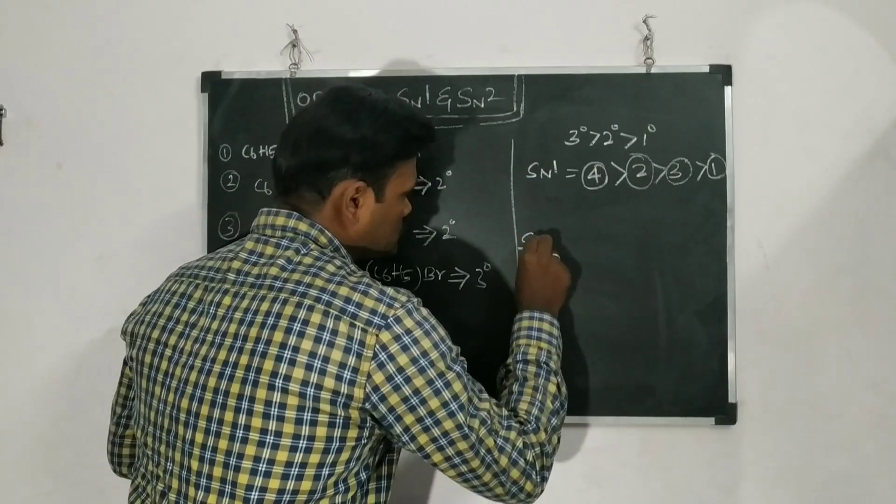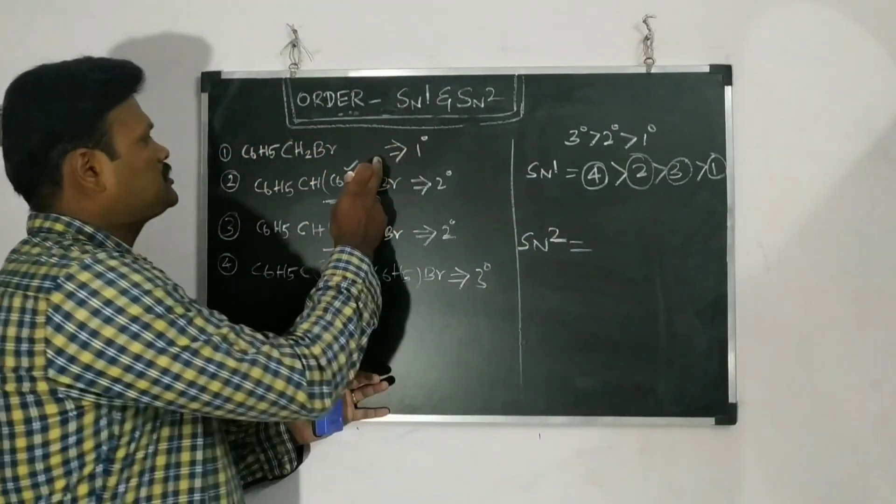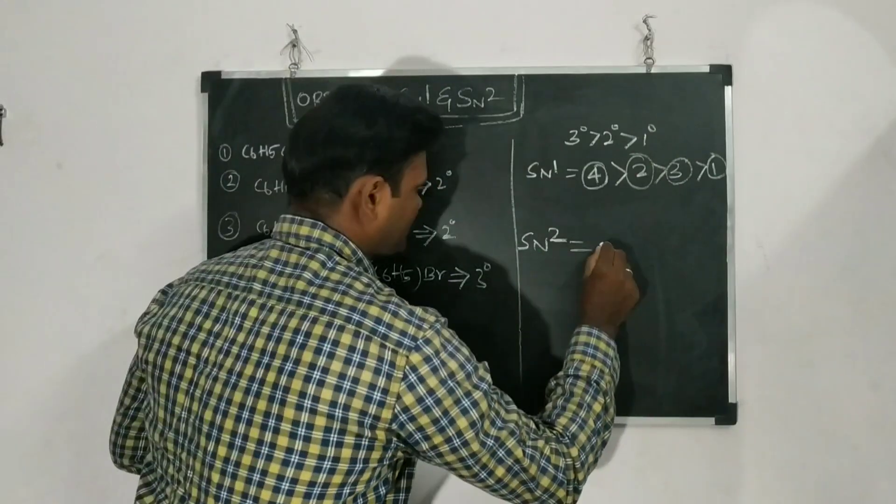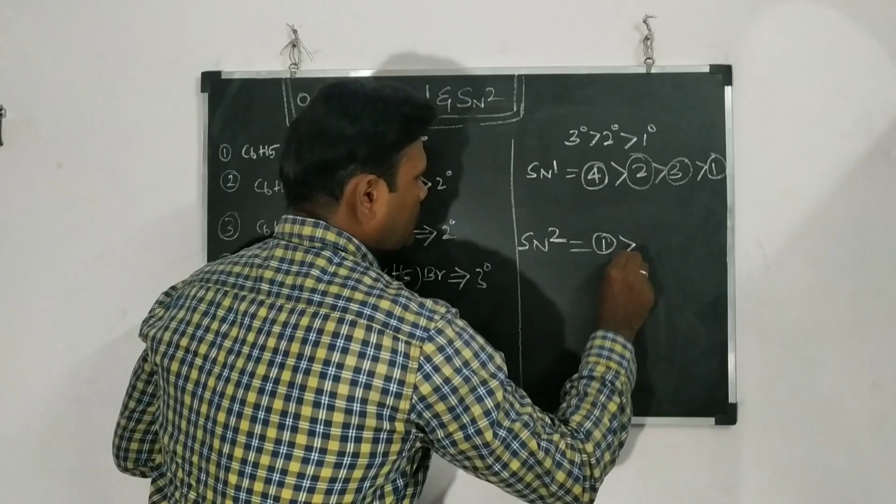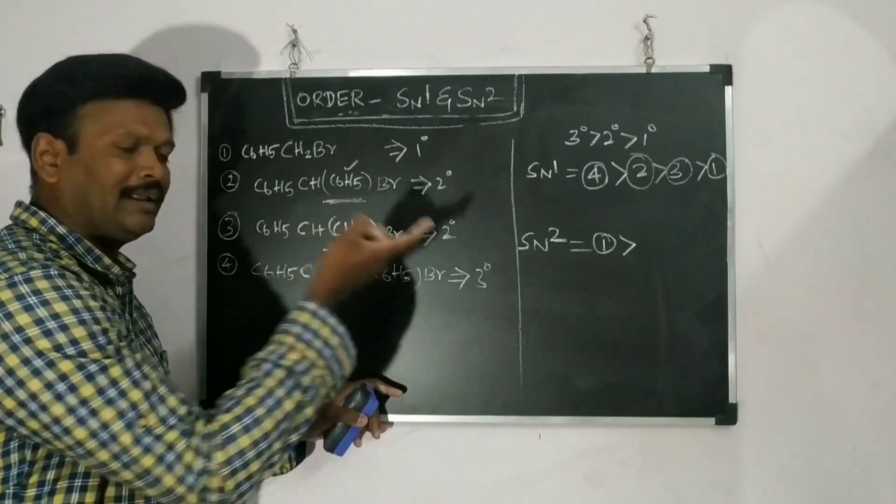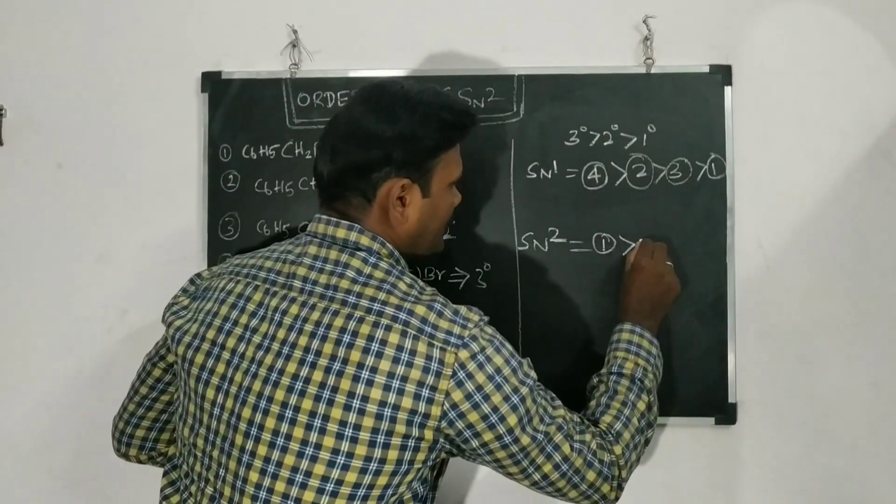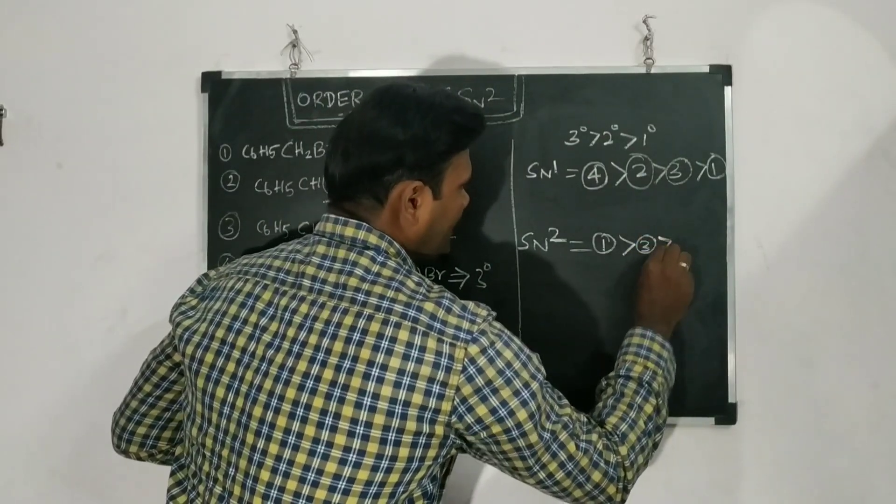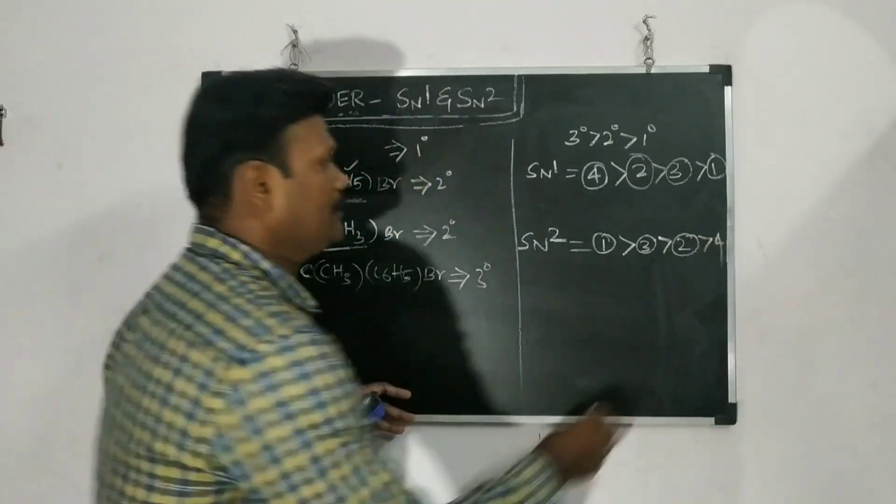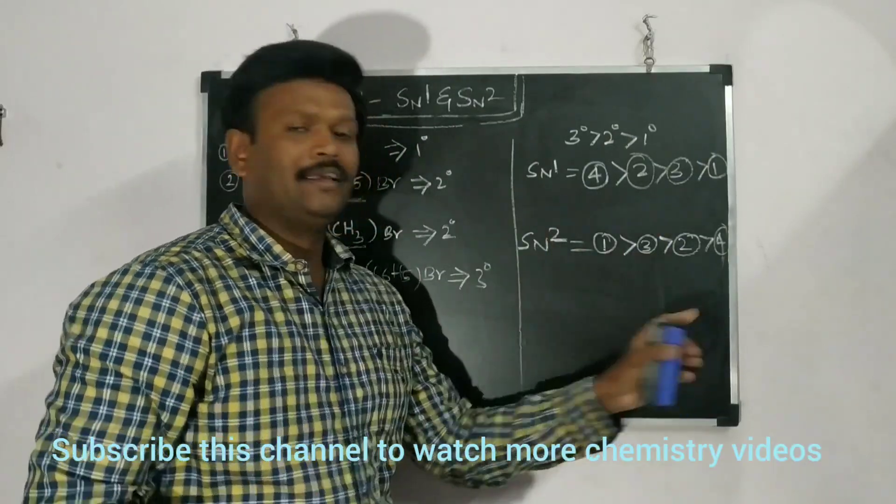Now we can find out the SN2. SN2 is just opposite for SN1. So here initially the 1 degree alkyl halide will react faster. So one will be reacting faster. And the steric hindrance will be more. So the less steric hindrance will be preferred in SN2. So the order of reactivity is three. And then it is two. And then it is four. Okay. So exactly reverse of this SN1 will be called as SN2.